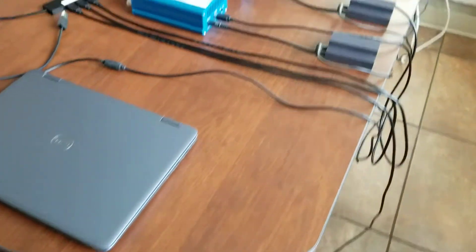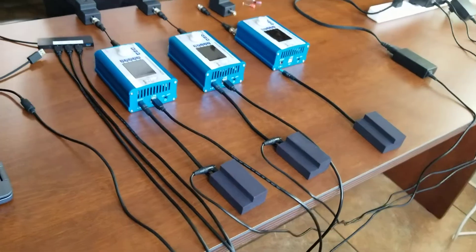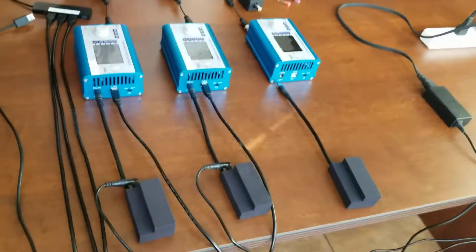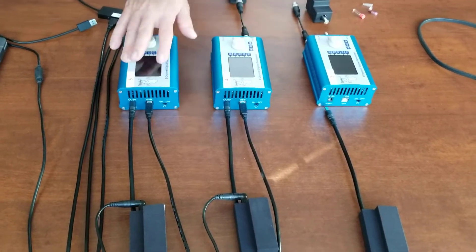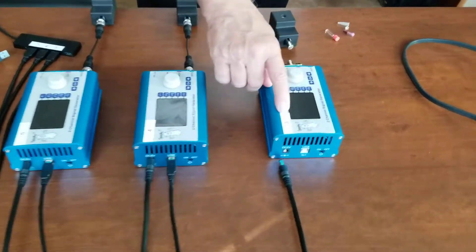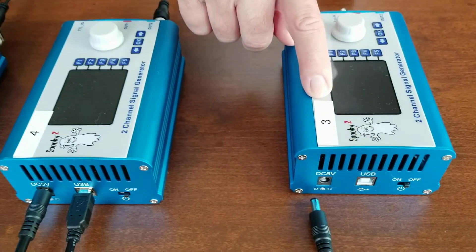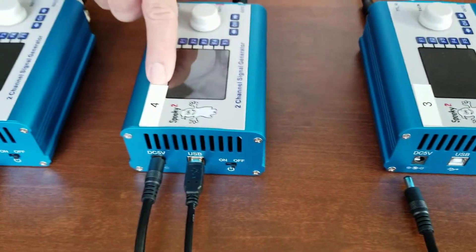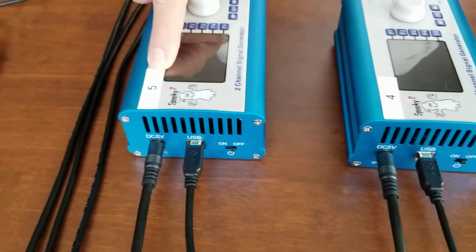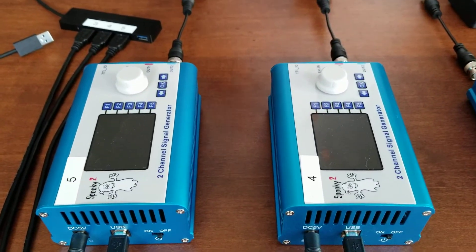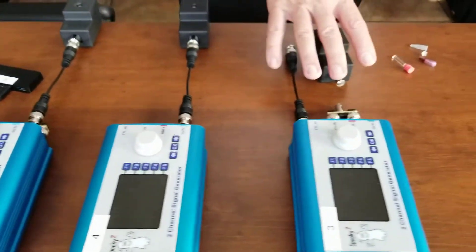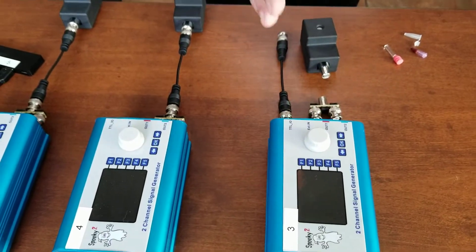Here we have three generators. We have channel 3, channel 4, and channel 5. You'll be able to tell from labeling that we put onto the generators. 3, 4, and 5. As you can see, 4 and 5 have already been connected and we've left channel 3 disconnected to show you how it's done.